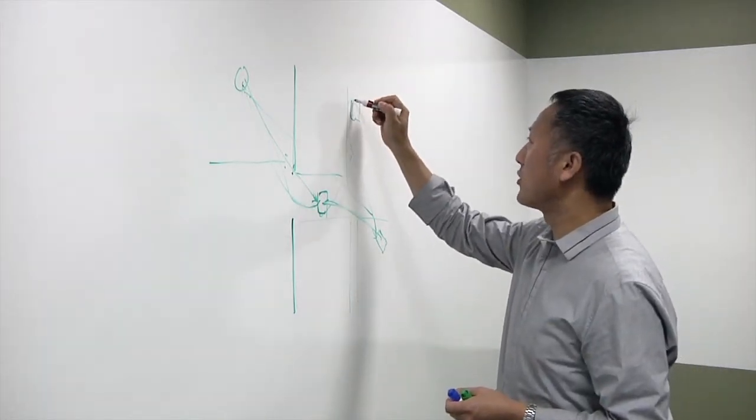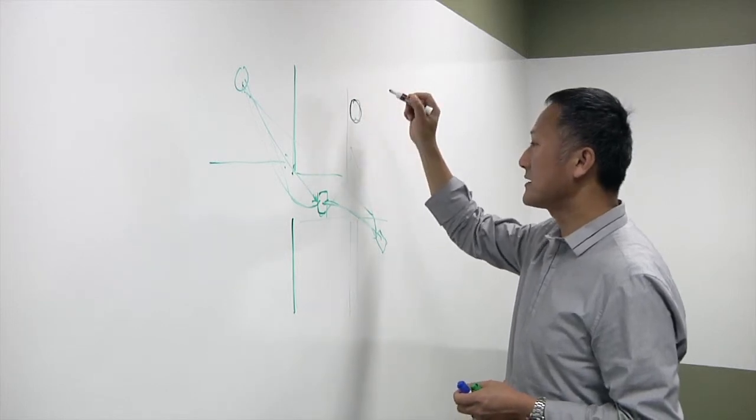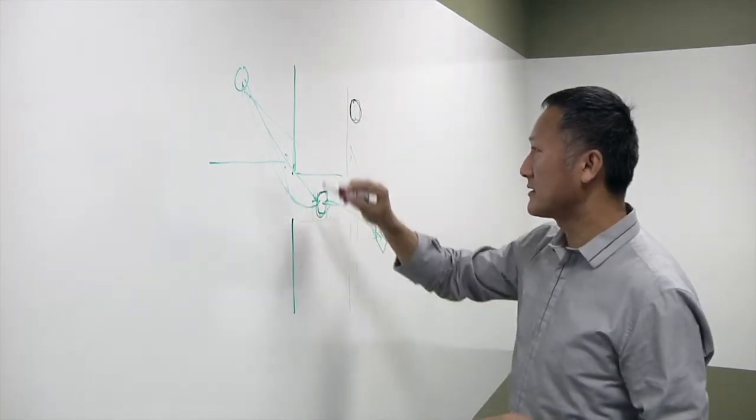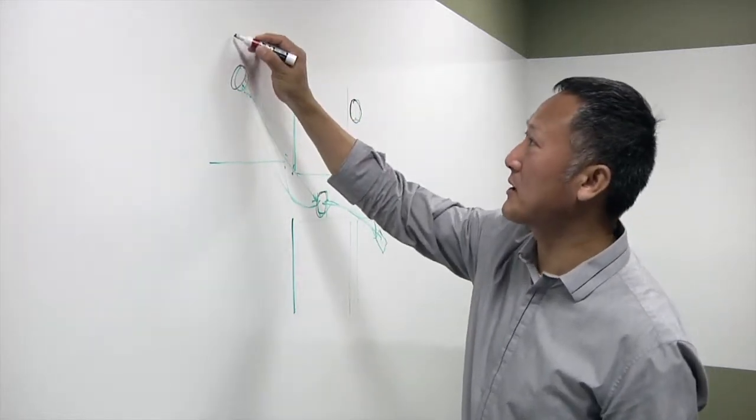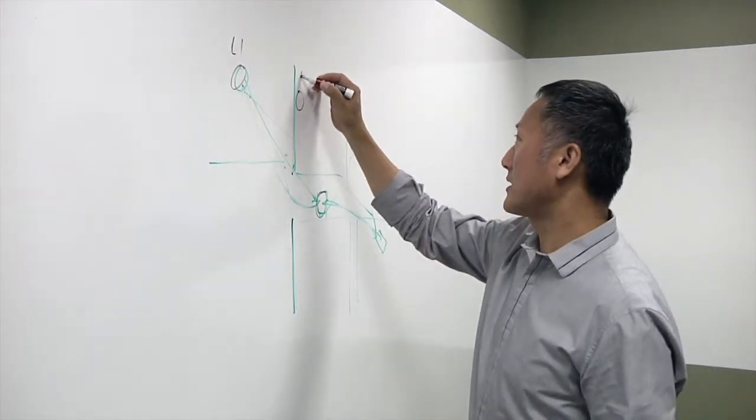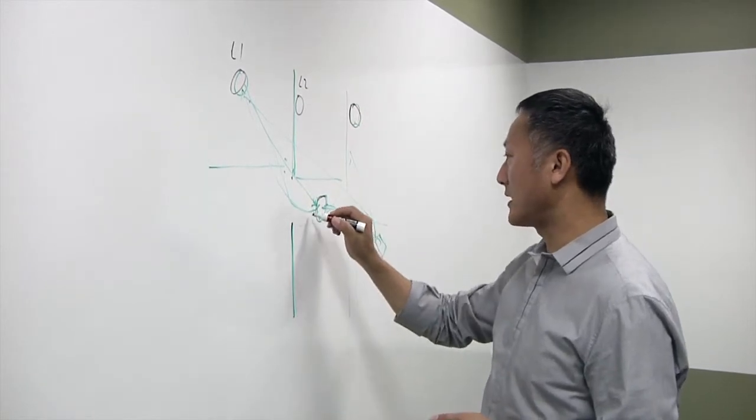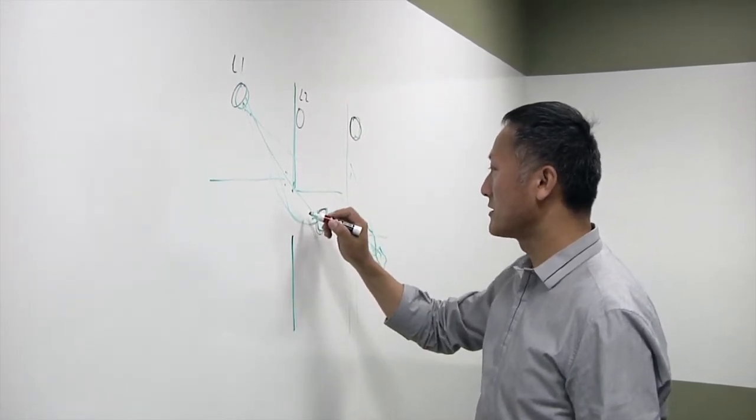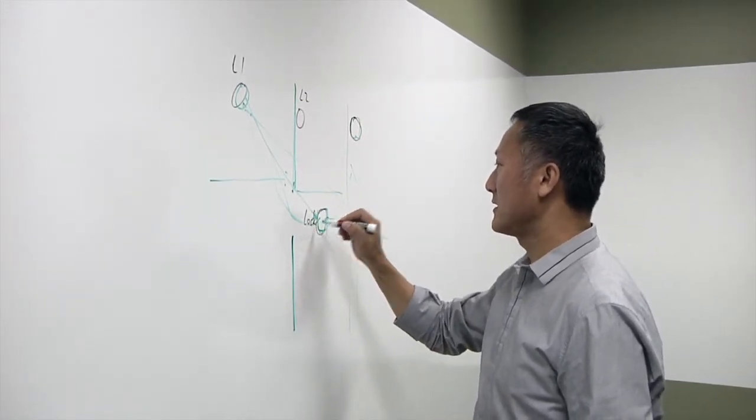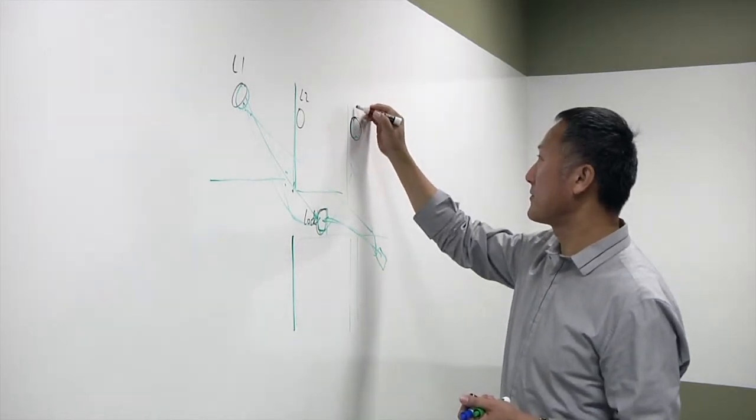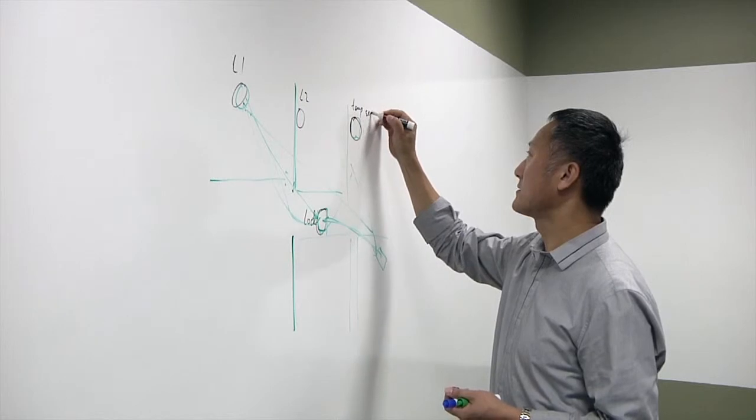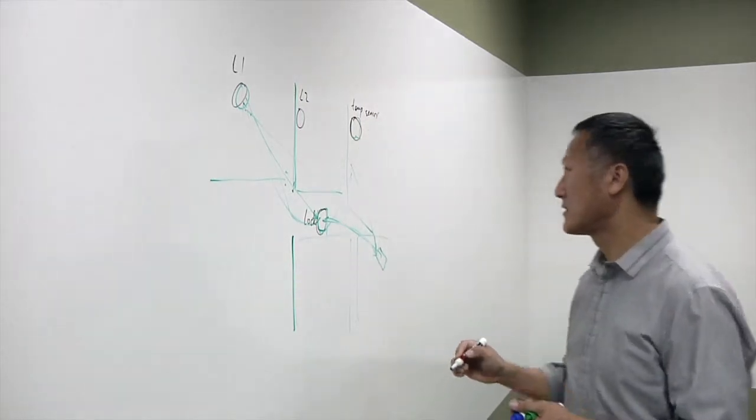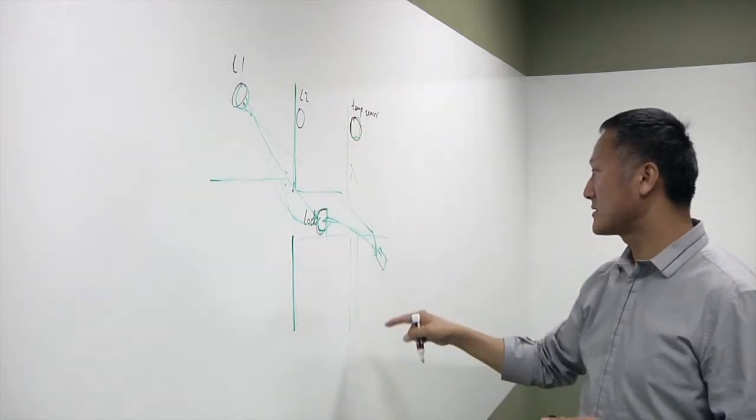So let's say you have one device here, and you get one device here, and you probably get another device here, you get another device here. Let's say this is light bulb one, and this is light bulb two, this is a door lock, and this is a temperature sensor.